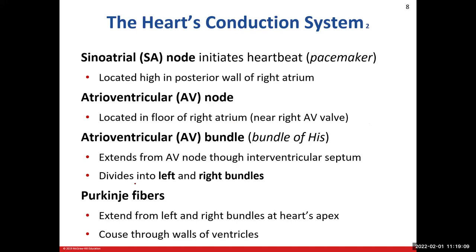Let's dissect the conduction system. The first part is the SA node, or sinoatrial node — this is what initiates your heartbeat, so we nickname it the pacemaker. This is located in the right atrium on the posterior wall. The heartbeat starts here at the SA node, then it discharges and allows action potentials to spread all the way out like throwing a stone into a body of water. Located close by in the floor of the right atrium is our next structure, the AV node — atrioventricular node — close to the right atrioventricular valve that separates the right atria and right ventricle.